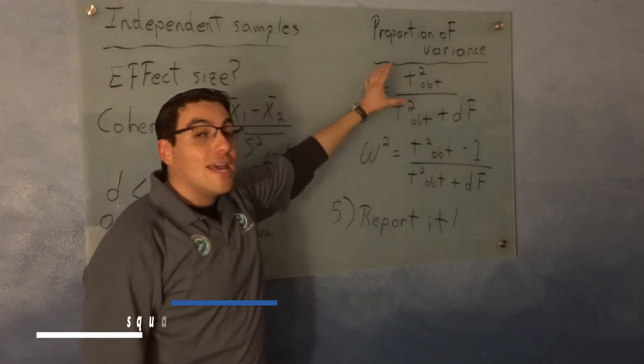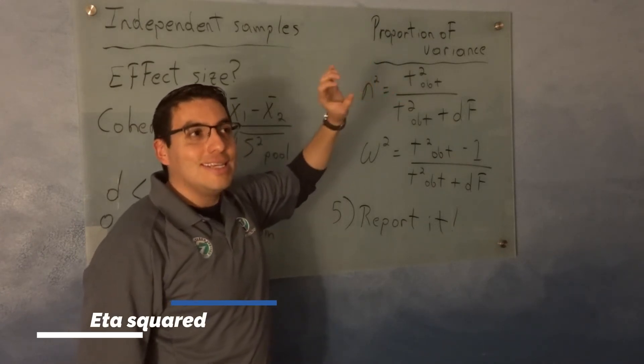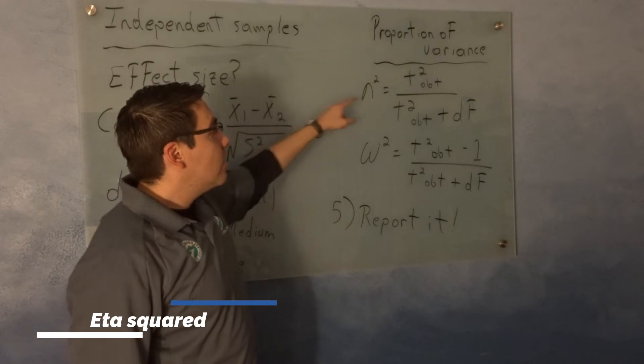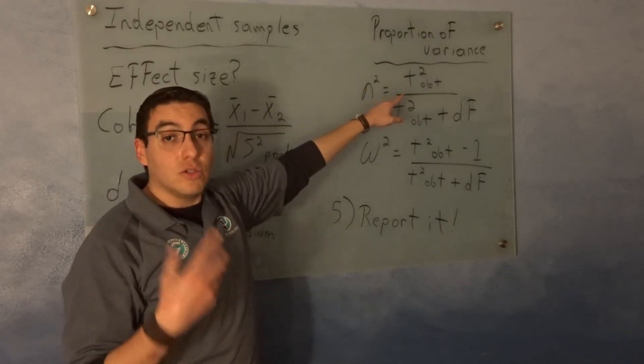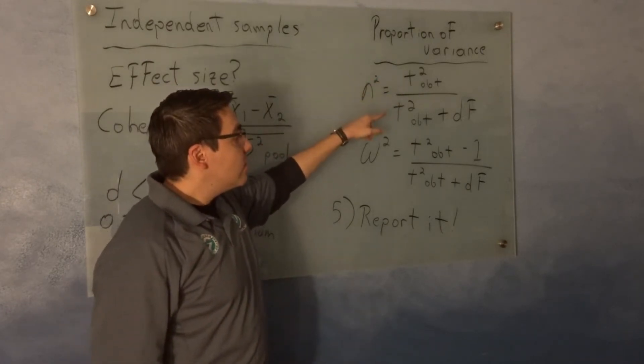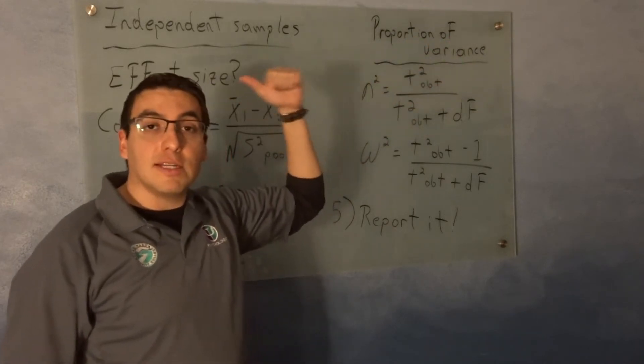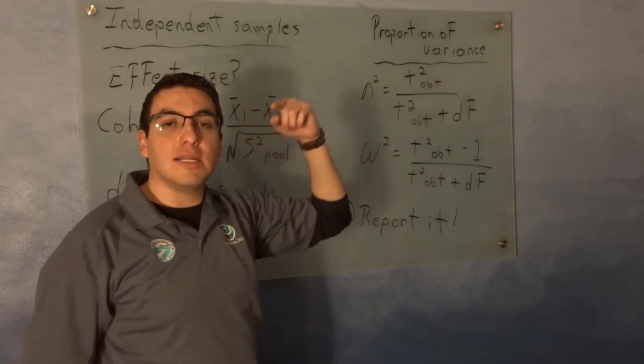This one is called eta-squared. And what you have to do is get your t-value squared, and divide it by your squared value plus your degrees of freedom, which we previously did, is n-1 plus n-1.